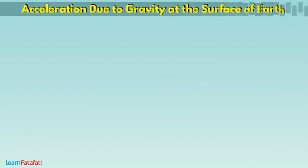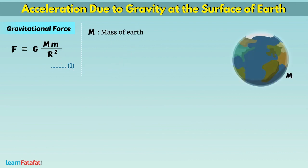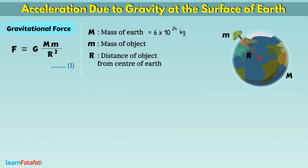Let's calculate the value of acceleration due to gravity at the surface of Earth. This is the expression of gravitational force, where capital M is the mass of Earth whose value is 6 multiplied by 10 raised to the power 24 kg. Small m is the mass of the object placed at its surface, and r is the distance of the object from the center of Earth, i.e., the radius of Earth. It is equal to 6.4 multiplied by 10 raised to power 6 meters.